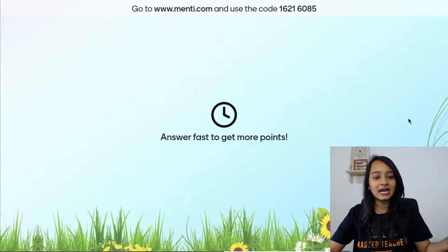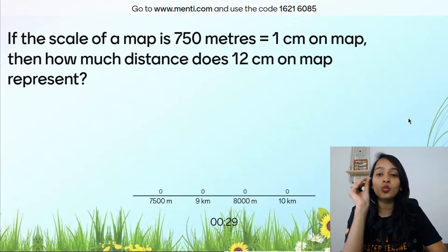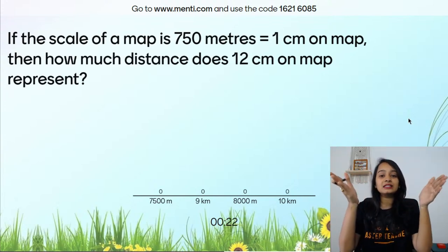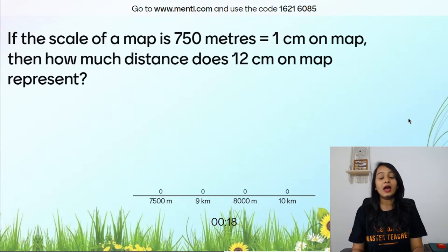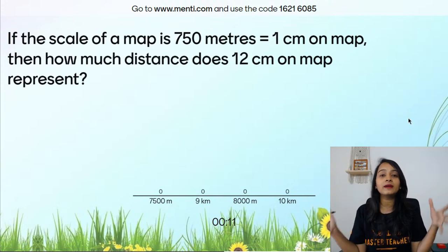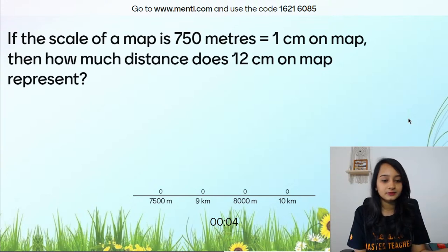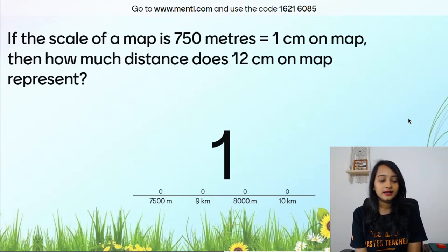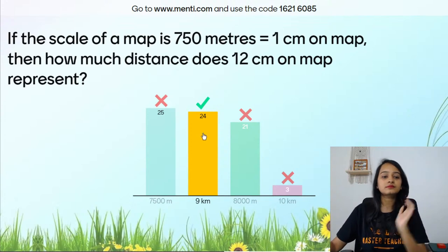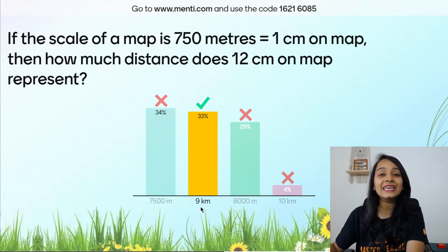Question 4: If the scale of a map is 750 meters equals 1 centimeter, then what distance does 12 centimeters on the map represent in real life? 750 meters is 1 centimeter, so 12 centimeters on the map will represent how many meters? The answer is 9,000 meters, which equals 9 kilometers. Let's look at the leaderboard: Kushbu, Charvi, Vaibhav, Anshika, Sai Ashrita, Abheer, Dhanraj, Shravya, Harshit, and Dhoni Forever!